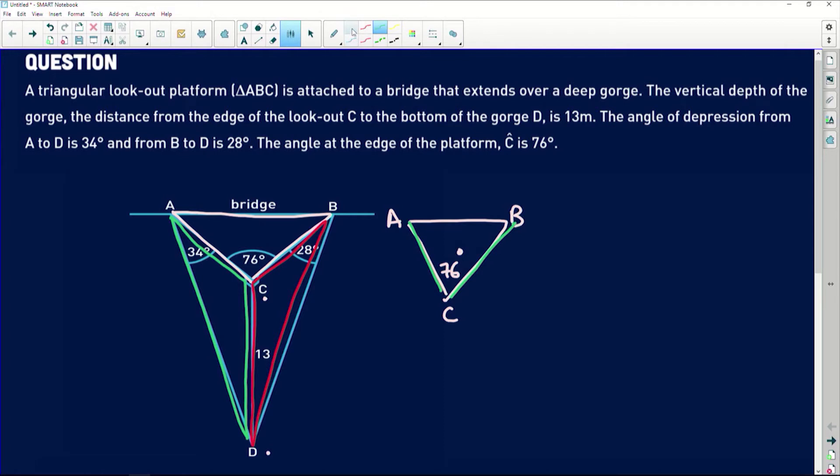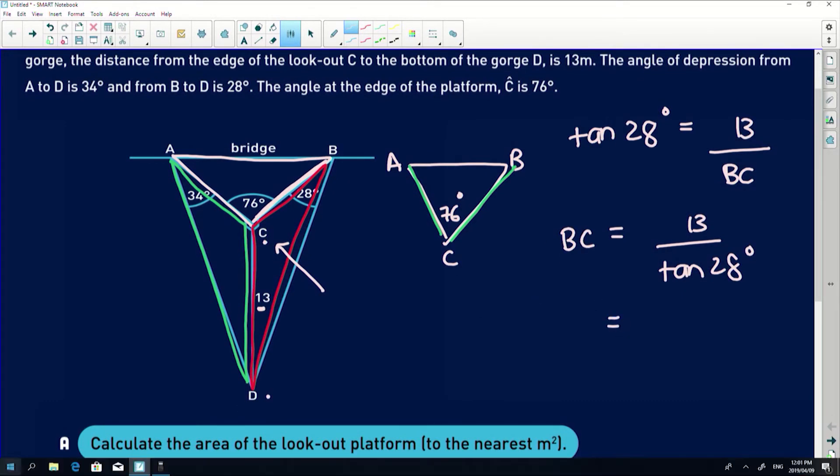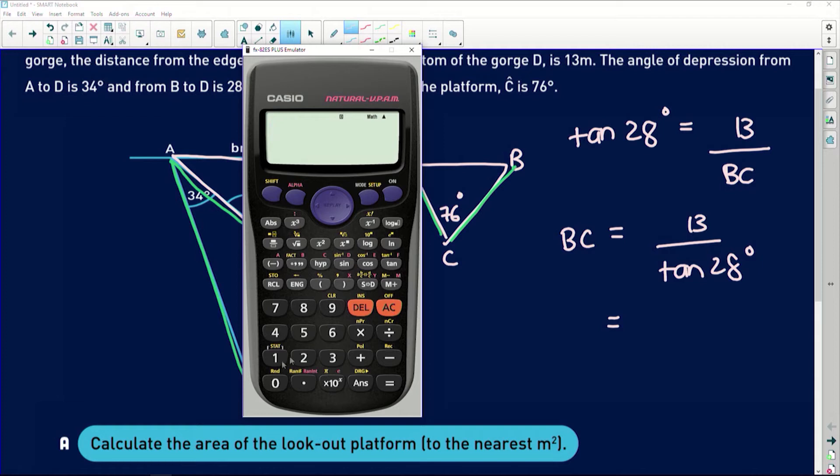In this triangle here I have the side opposite the given angle and I'm trying to find the side adjacent. So tan of 28 degrees is equal to the opposite side which is 13 over BC, which means that BC is equal to 13 over tan of 28 degrees. And if we stick that into our calculator, 13 divided by tan of 28 gives us 24.45. I'm going to round to two decimal places.